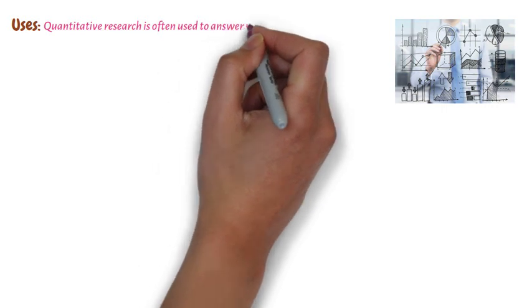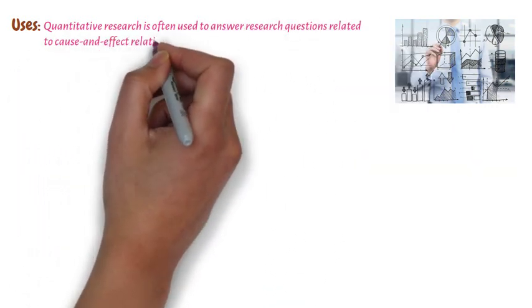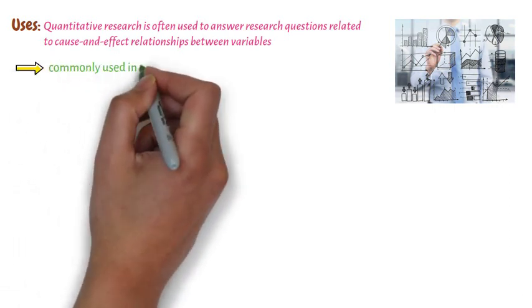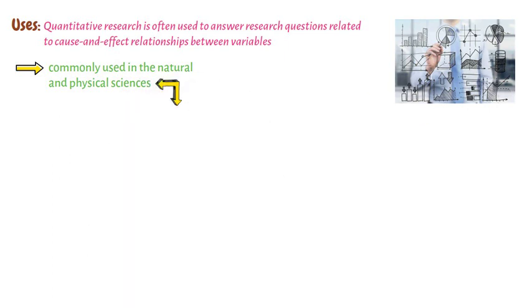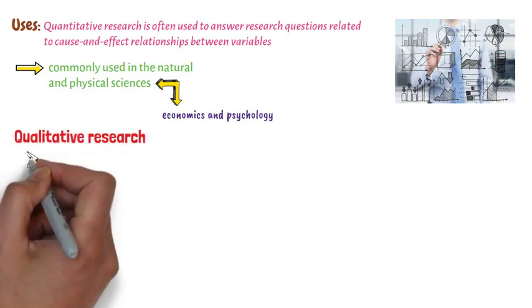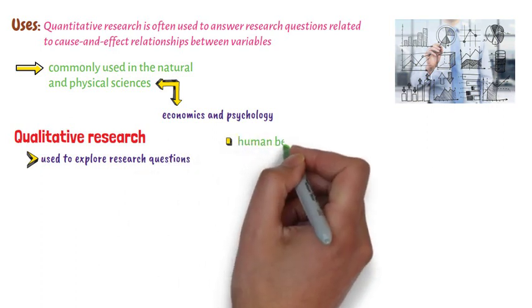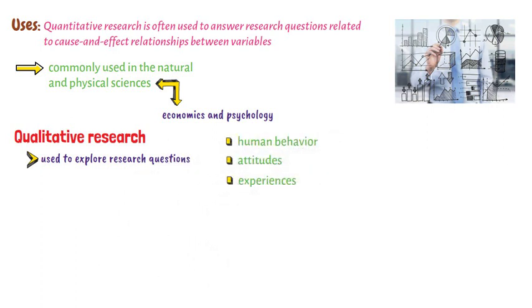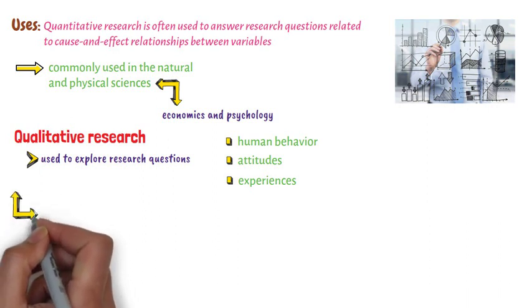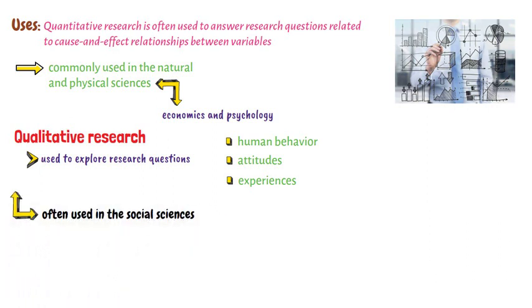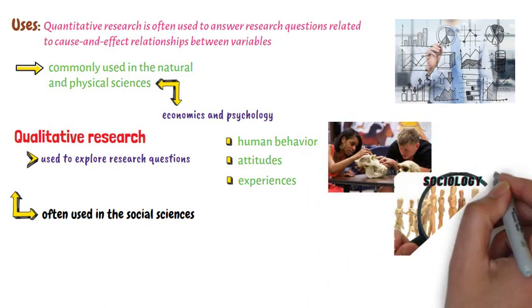In terms of uses, quantitative research is often used to answer research questions related to cause-and-effect relationships between variables. This approach is commonly used in the natural and physical sciences, as well as in economics and psychology. Qualitative research, on the other hand, is used to explore research questions related to understanding human behavior, attitudes, and experiences. Qualitative research is often used in the social sciences, including anthropology, sociology, and education.